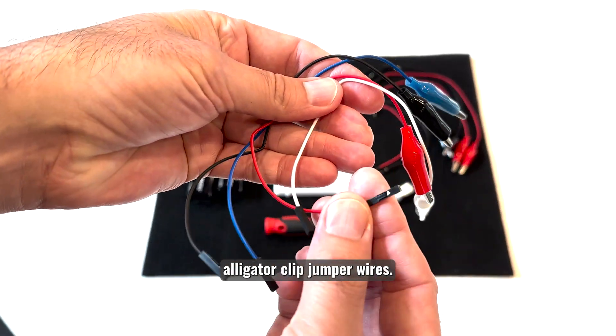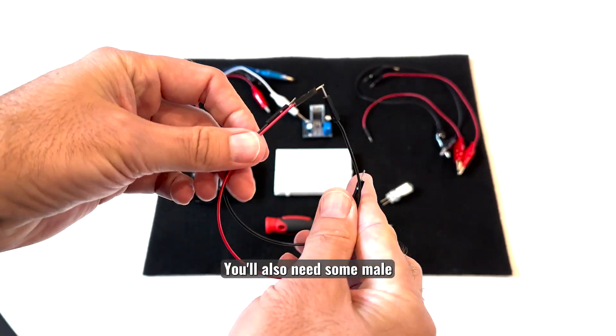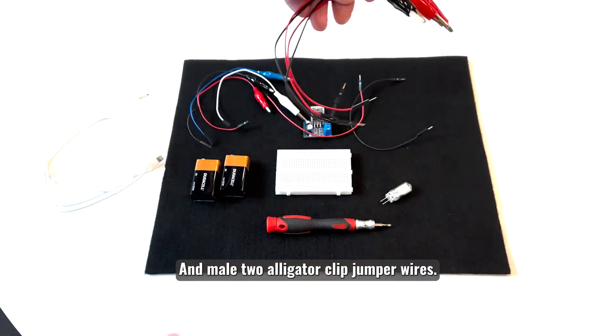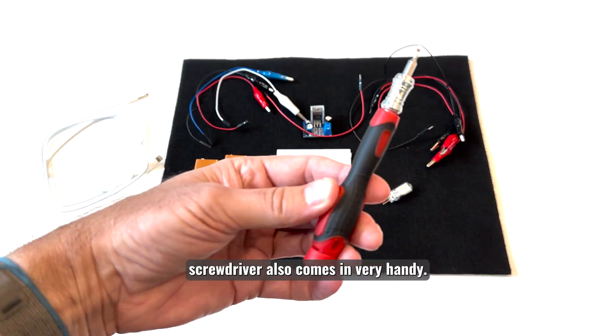There are female to alligator clip jumper wires. You'll also need some male to male jumper wires and male to alligator clip jumper wires. A small flat head screwdriver also comes in very handy.